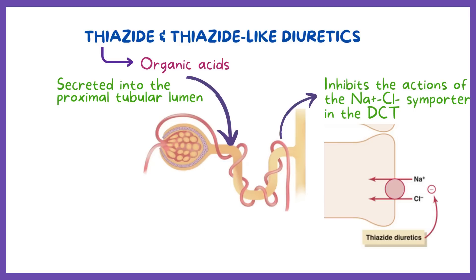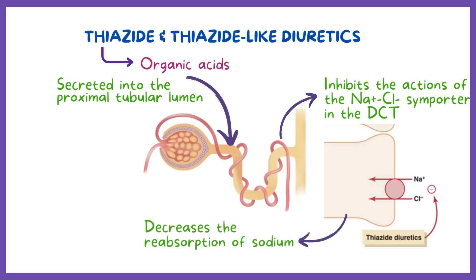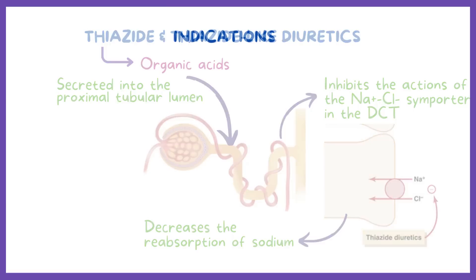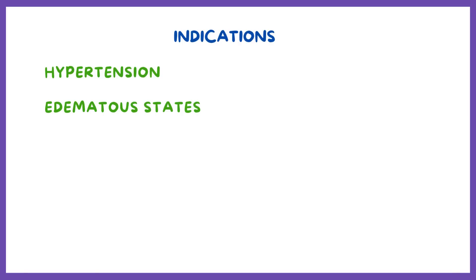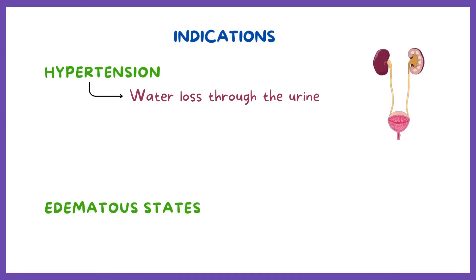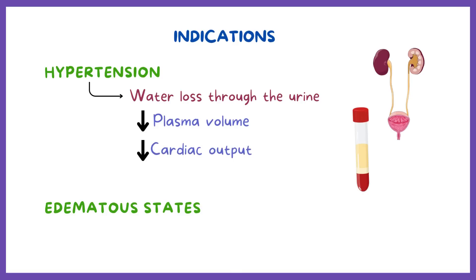The agents in this class are organic acids that are secreted into the proximal tubular lumen. Eventually, they inhibit the actions of the sodium-chloride symporter in the distal convoluted tubule, decreasing the reabsorption of sodium. This leads to decreased plasma volume and cardiac output, resulting in lower blood pressure.